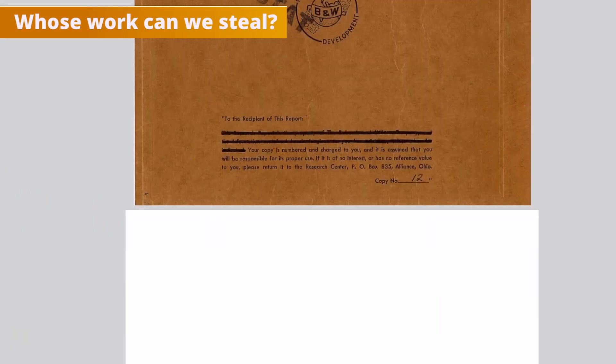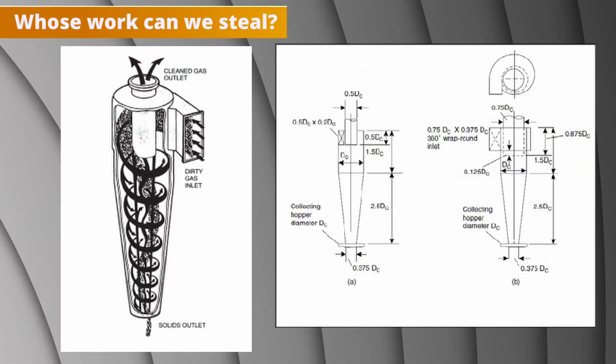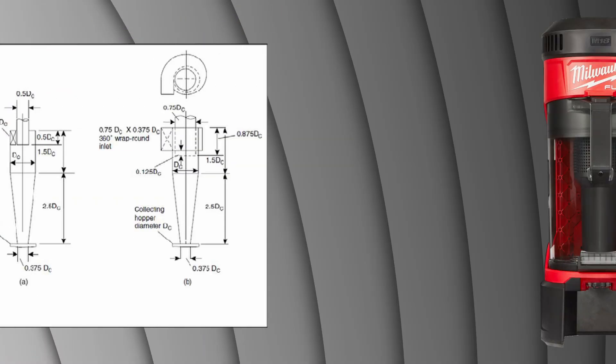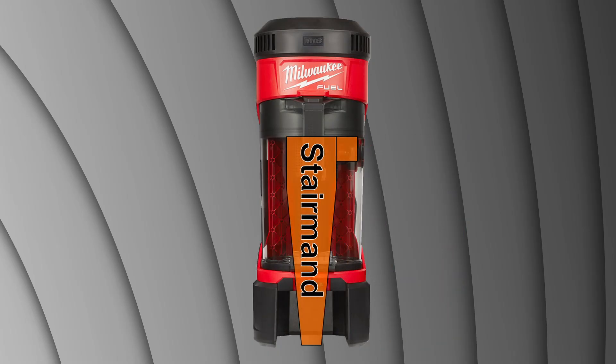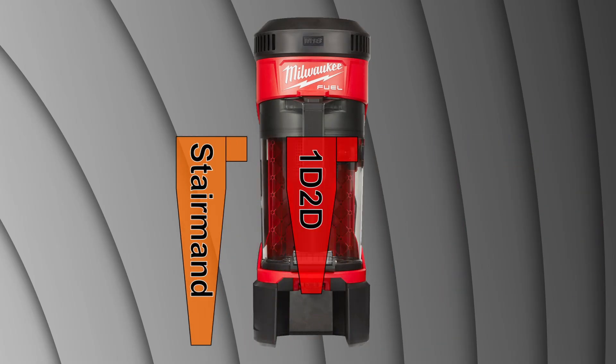There's over 60 years of published research on cyclone separators with the Stairman design being something of a benchmark. But the Stairman design and even the shorter 1D, 2D design won't fit into the space we have as they're too long.